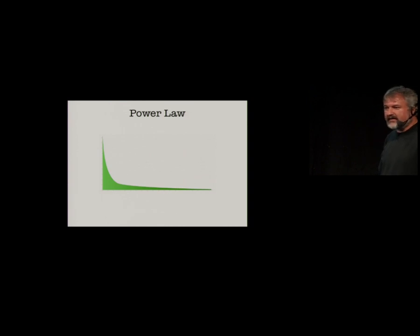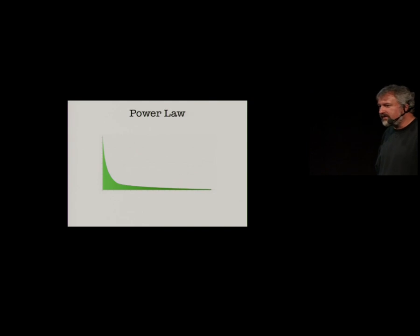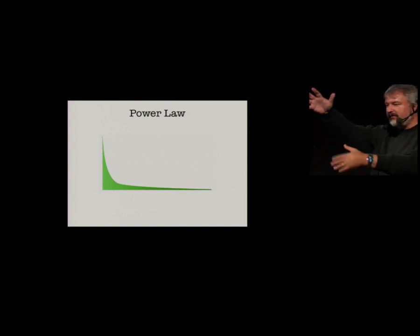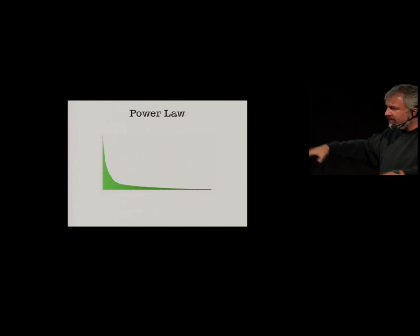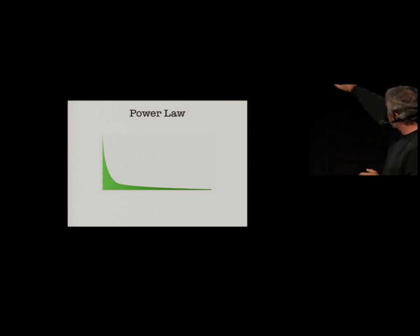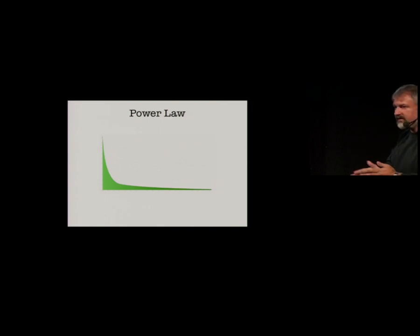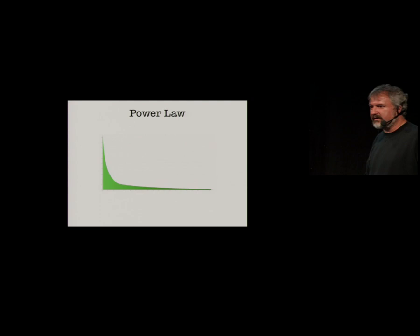We tend to have lots of small classes, fewer bigger ones, and then we have the god classes. They kind of act like hubs for our design — the big abstraction that everybody adds methods to and then delegates out from. We end up having this tree-like structure: many, many small classes on the left-hand side, not too many big classes on the right side. This doesn't get enough play, but it's an interesting thing to know about software.